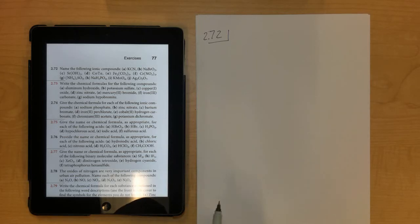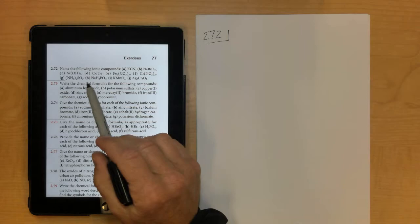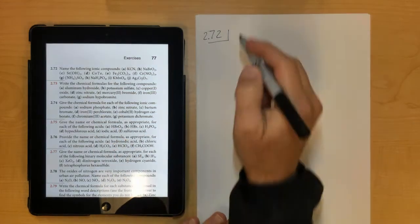All right, this is chapter 2, number 72. This is one where you have to name the following ionic compounds.